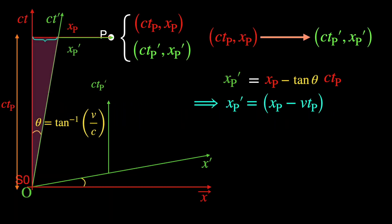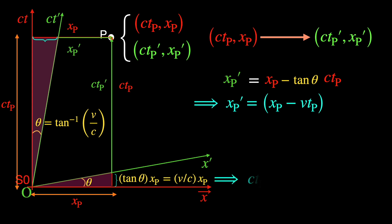In a similar fashion, ct prime p is smaller than ctp by a segment of size tan theta times xp or v by c times xp. This size is worked out looking at the bottom right angle triangle with base xp. Thus, ct prime p is ctp minus v by c into xp simplifying to t prime p equal to tp minus v by c square into xp.